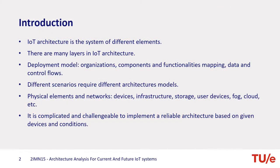Here is the introduction. IoT architecture is the system of different elements such as sensors, actuators, and other components. There are many layers in the IoT architecture. A different model of the architecture has many elements such as organizations, components and functionality mapping, and data and control flows.